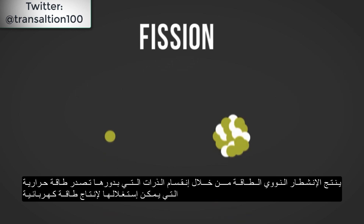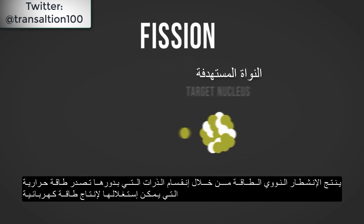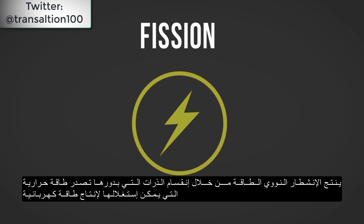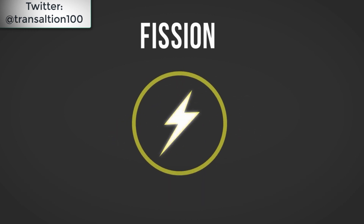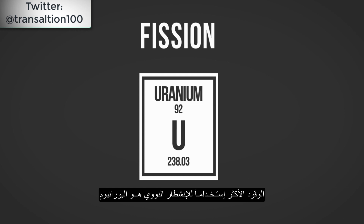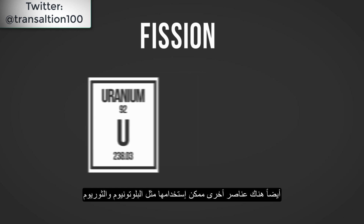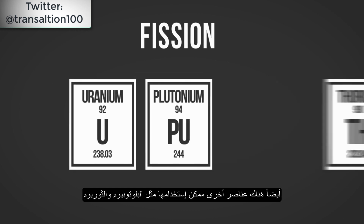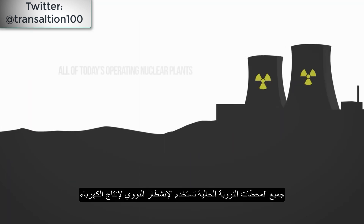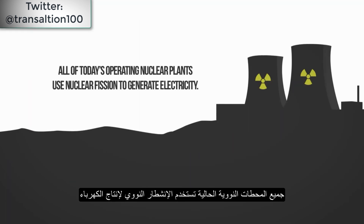Nuclear fission produces energy through the splitting of atoms, which releases heat energy that can be harnessed to produce electricity. The fuel most commonly used for nuclear fission is uranium. However, other elements such as plutonium and thorium can also be used. All of today's operating nuclear plants use nuclear fission to generate electricity.